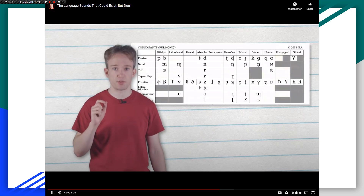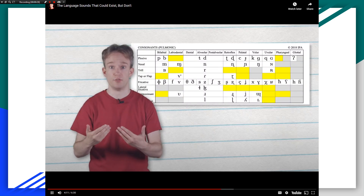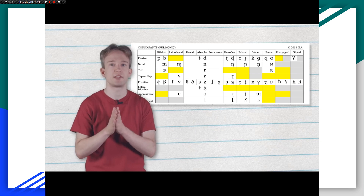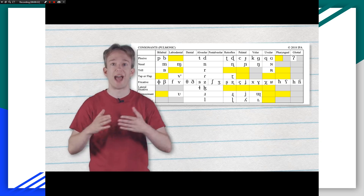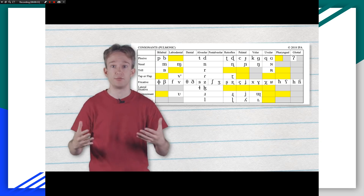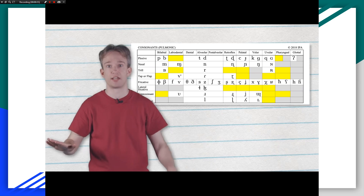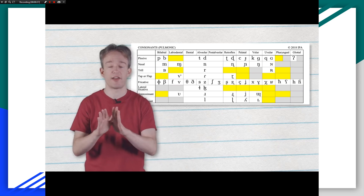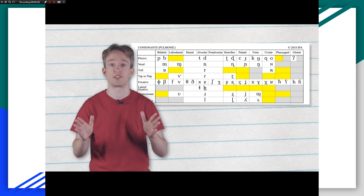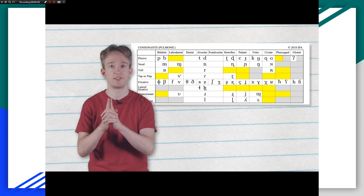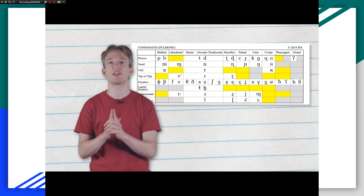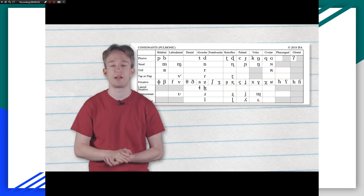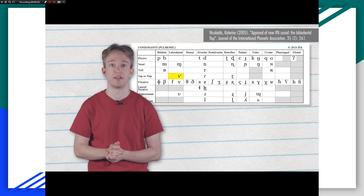The ones with white backgrounds are possible for humans to make, but they've not been given a symbol because linguists have never found them actually being used as sounds in any of the world's languages. Sometimes they are found to exist by some researcher somewhere, and if that happens, then the International Phonetics Association will add a symbol. The last time that happened was in 2005.